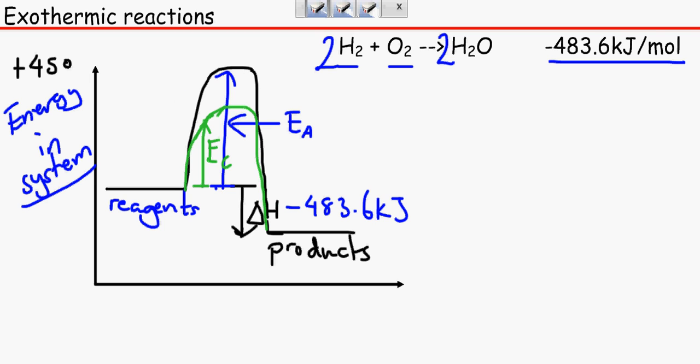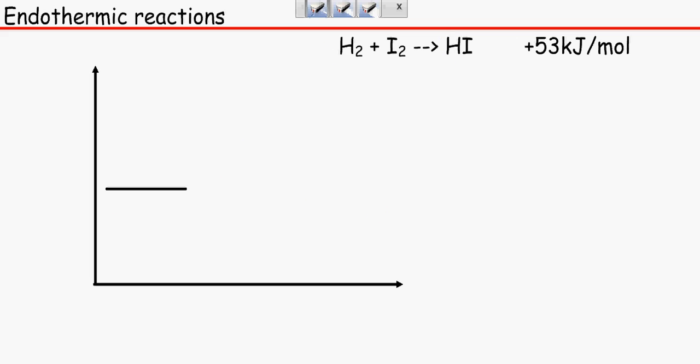So for an endothermic reaction, it's exactly the same, but we've just got a different outset to it. Since there is more energy in the system, the product line is going to be higher than the reagents line. Because there is more energy in the system. Since there's more energy, it's higher. Less energy is lower.